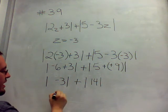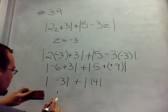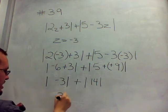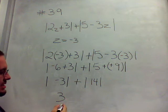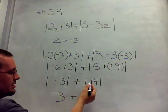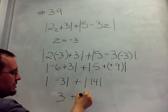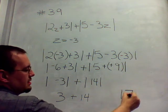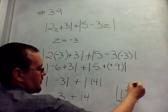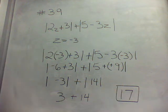So we have the absolute value of negative 3 plus the absolute value of 14. The absolute value of negative 3 is just 3. When you're looking at absolute values, it's always the positive of what number that's inside. 3 plus the absolute value of 14, which is 14. So our answer is 17. That's number 39.